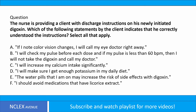A. If I note color vision changes, I will call my eye doctor right away. B. I will check my pulse before each dose, and if my pulse is less than 60 BPM, then I will not take the digoxin and call my doctor. C. I will increase my calcium intake significantly. D. I will make sure I get enough potassium in my daily diet. E. The water pills that I am on may increase the risk of side effects with digoxin. F. I should avoid medications that have licorice extract.